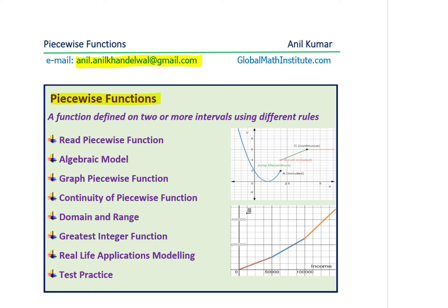Now, what is a piecewise function? As the name suggests, we have different pieces of a function in one place — that is what a piecewise function is. We have at least two pieces. A piecewise function is defined on two or more intervals or regions using different rules — that is the key. As shown here in the graph, we have a parabola, a straight line, and a horizontal straight line — three different pieces shown on a graph.